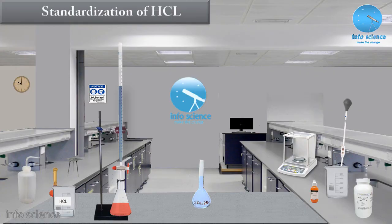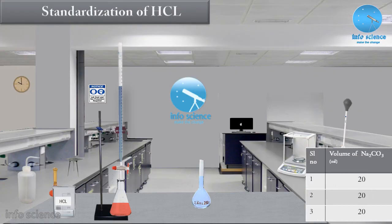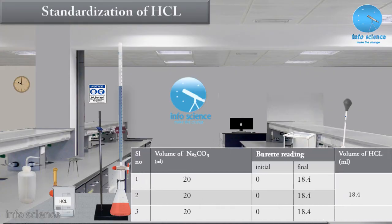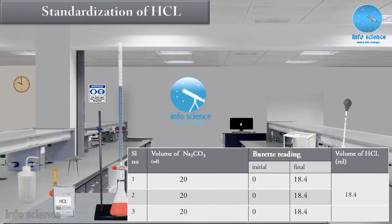Repeat the titration process 2 to 3 times and record the results in tabular form. The initial reading and the volume of HCl solution used is 18.4 ml. Keep this data for the next calculation step.